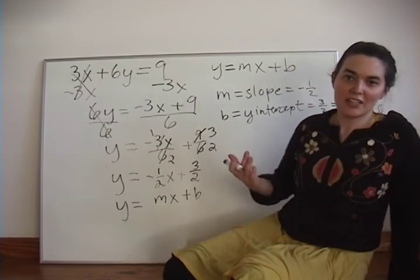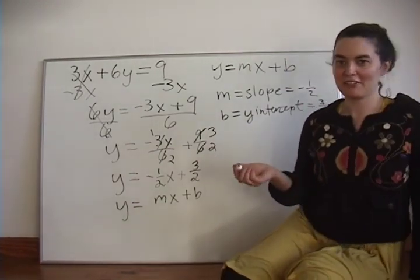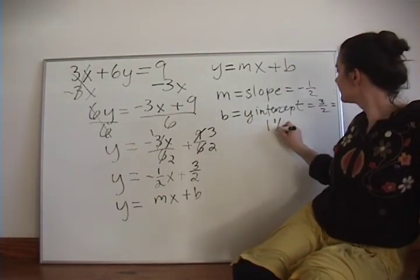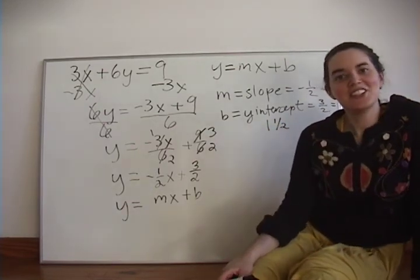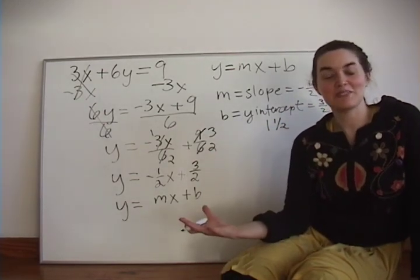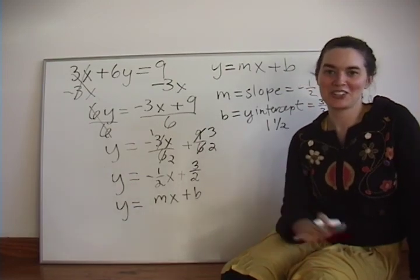Or, if you want to do that as a mixed number, it would be 1 and a half. So, that's how you convert between standard form and slope-intercept form.